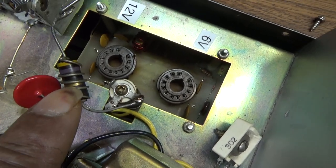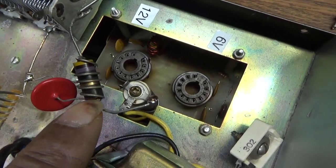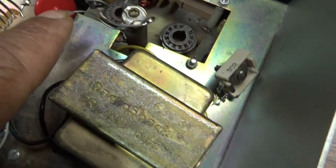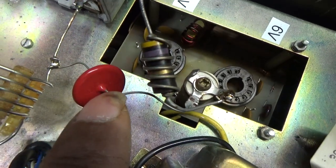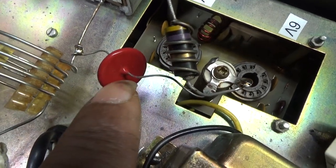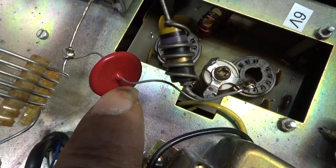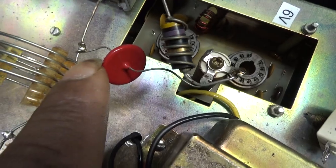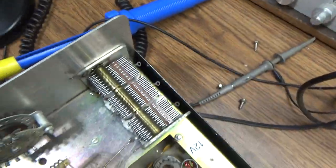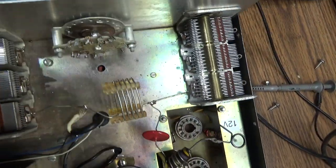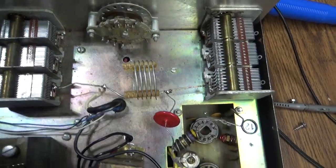Then you have a parasitic suppressor to stop harmonics, and a blocking cap that blocks the DC but lets the RF go through.